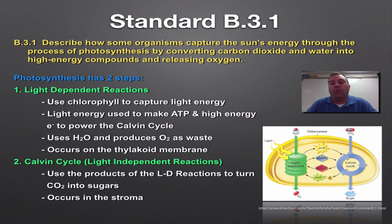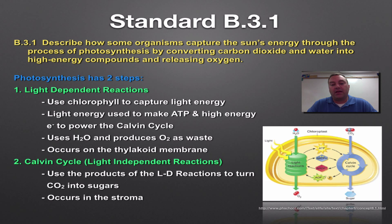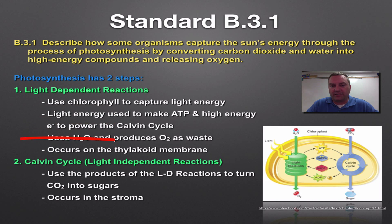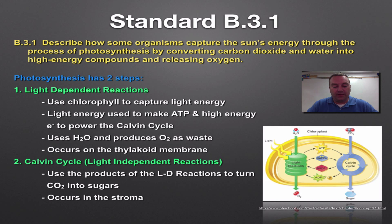ATP and high-energy electrons from the light-dependent reaction are going to power the Calvin cycle. Water is used in the light-dependent step and produces oxygen as a waste product. This occurs on the thylakoid membrane — the green little poker chips inside a chloroplast. The Calvin cycle occurs in the stroma, the inner liquid part of the chloroplast, where carbon dioxide is turned into sugars.